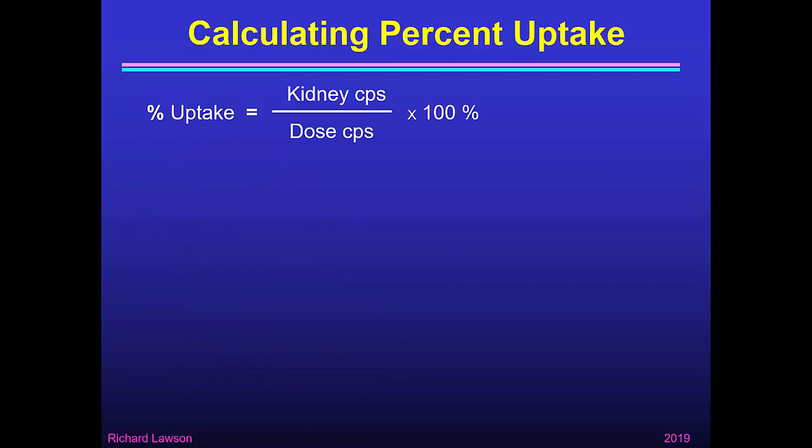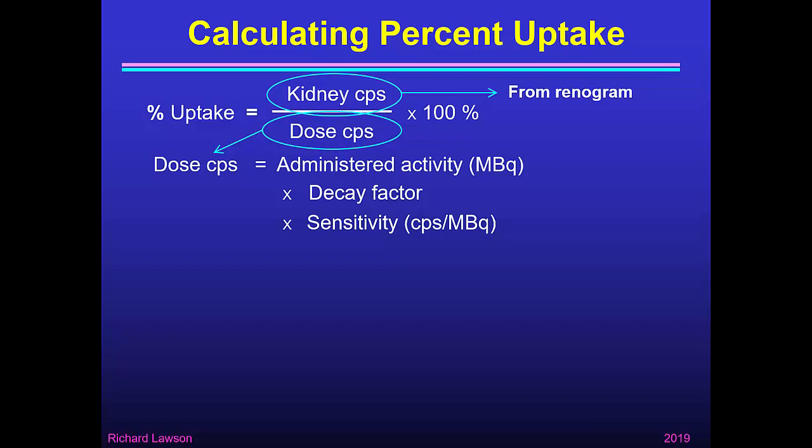To calculate percent uptake we need to take the kidney counts per second as a fraction of the counts per second in the injected dose and multiply by 100 to get a percent. The kidney counts per second come from the renogram after background subtraction, so that's easy. The dose counts per second is just the administered activity in megabecquerels with a decay factor, multiplied by the sensitivity of the gamma camera in counts per second per megabecquerel.